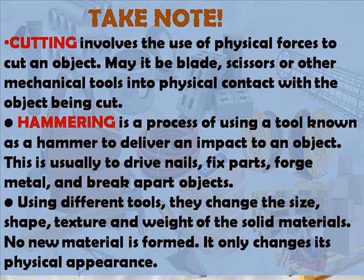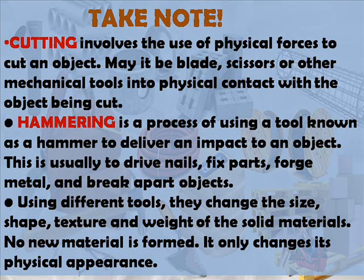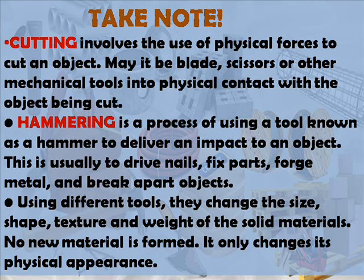Take note, kids: cutting involves the use of physical forces to cut an object — it may be a blade, scissor, or other mechanical tools into physical contact with the object being cut. Hammering is a process of using a tool known as a hammer to deliver an impact to an object, usually to drive nails, fix parts, forge metal, and break apart objects. Using different tools, they change the size, shape, texture, and weight of solid materials. No new material is formed — only the physical appearance changes.